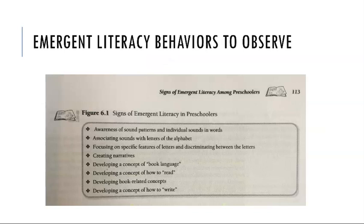When we're looking at emergent literacy behaviors we want to observe certain things in our preschoolers. We want to see how aware they are of sound patterns and individual sounds within words, if they can associate sounds with letters of the alphabet, if they can focus on specific features of letters and discriminate between them, if they can create narratives and invented stories, and if they can develop a concept of book language — knowing that language in books is different from the colloquial language we use to chat with a friend.